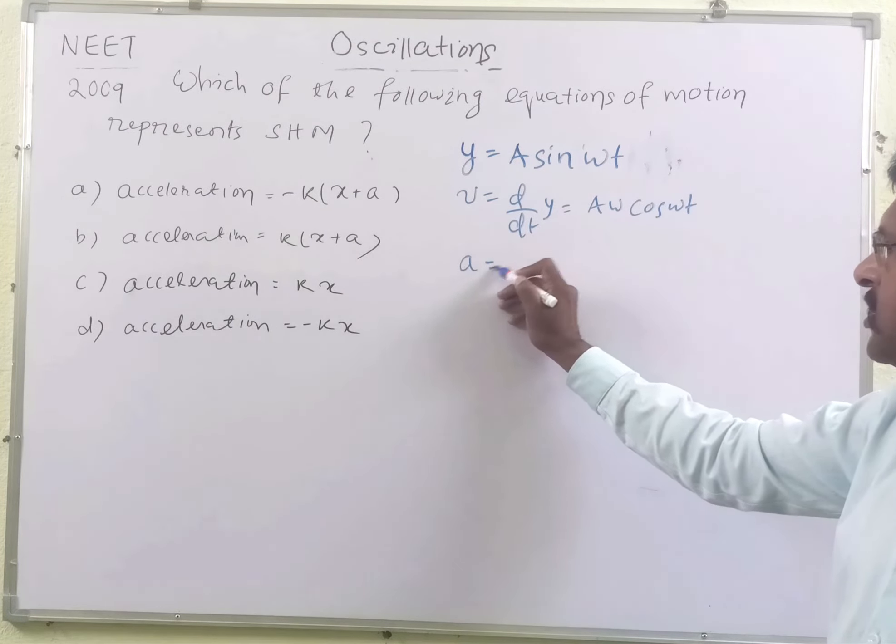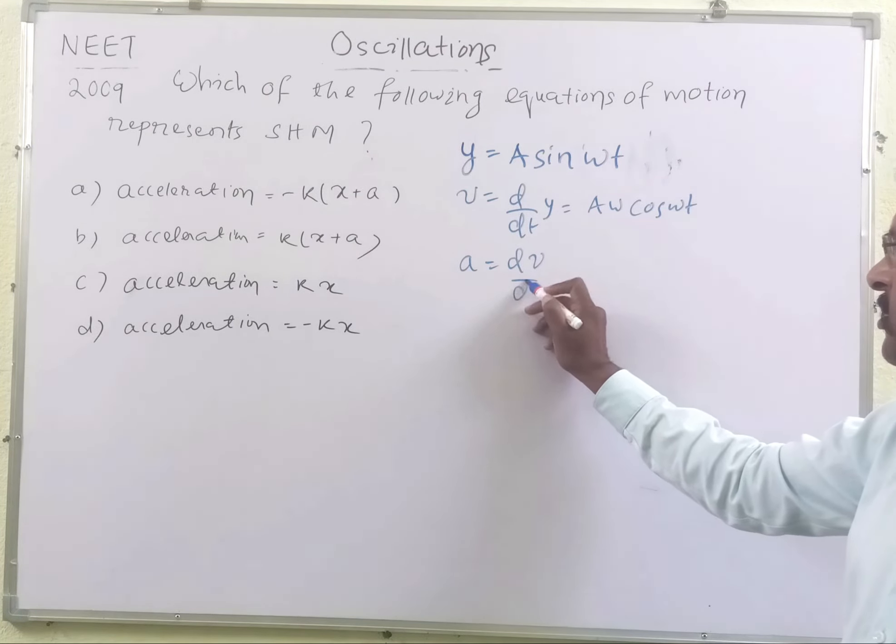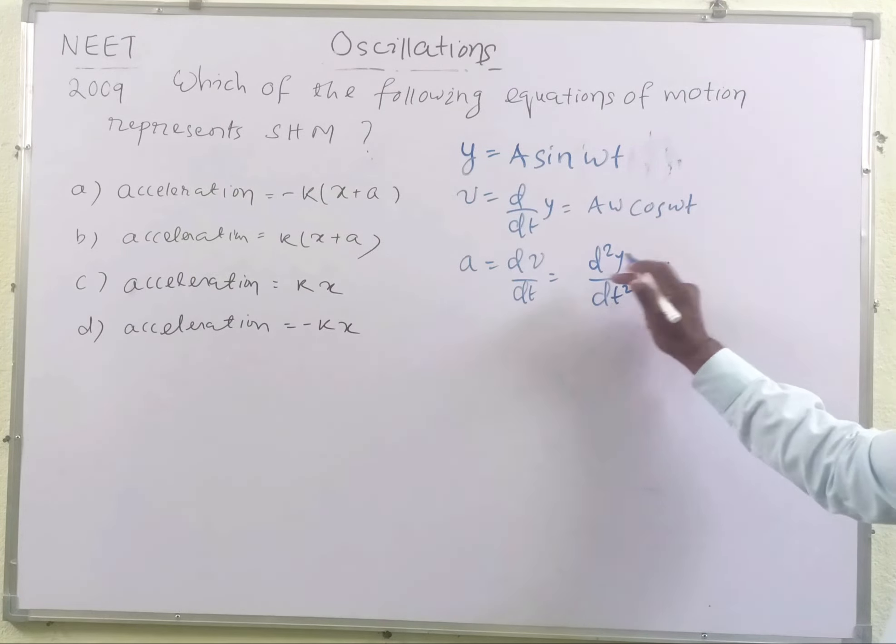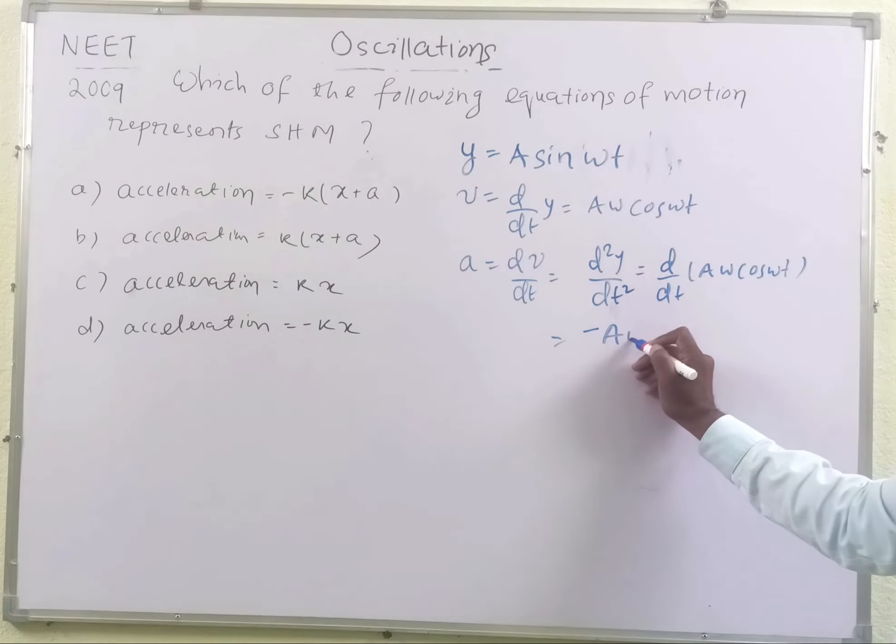And acceleration is dv/dt, the time rate of change of velocity, or this may be also written as d²y/dt². Let us time differentiate Aω cos(ωt). This becomes -Aω² sin(ωt).